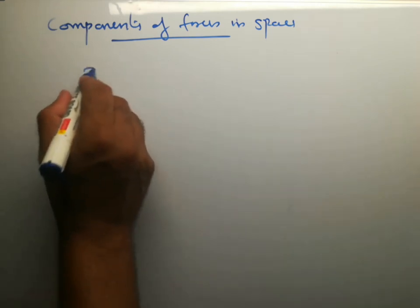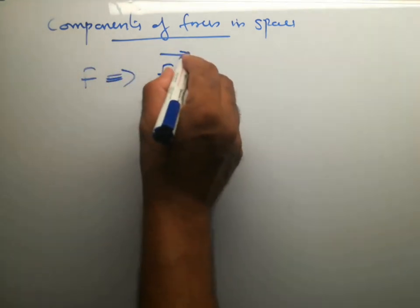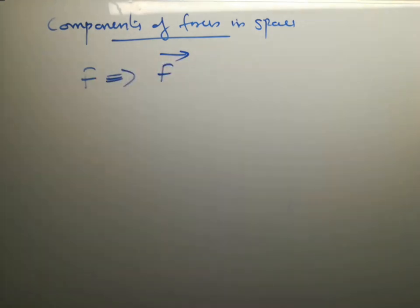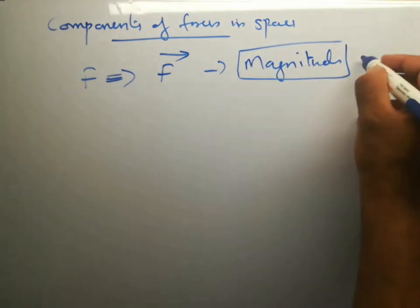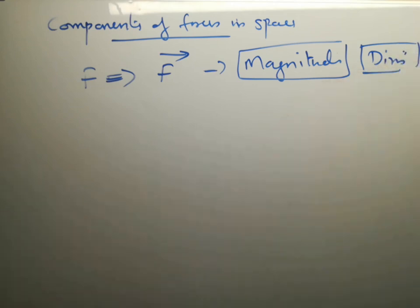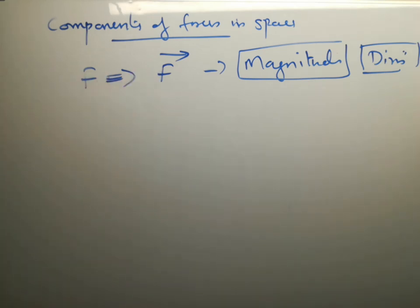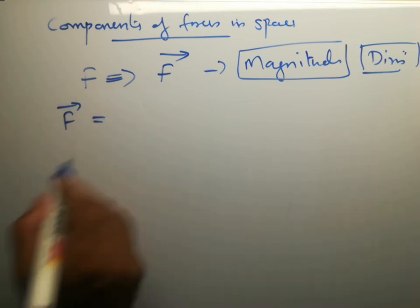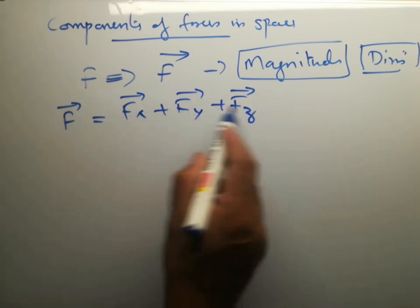If a force F is present, it can be represented as a vector using the notation F with an arrow on top. Any quantity can be represented as a vector using this arrow notation. This vector will have both magnitude and direction. Since force is a vector, it has both magnitude and direction. The force vector F in three dimensions can be represented as Fx plus Fy plus Fz.